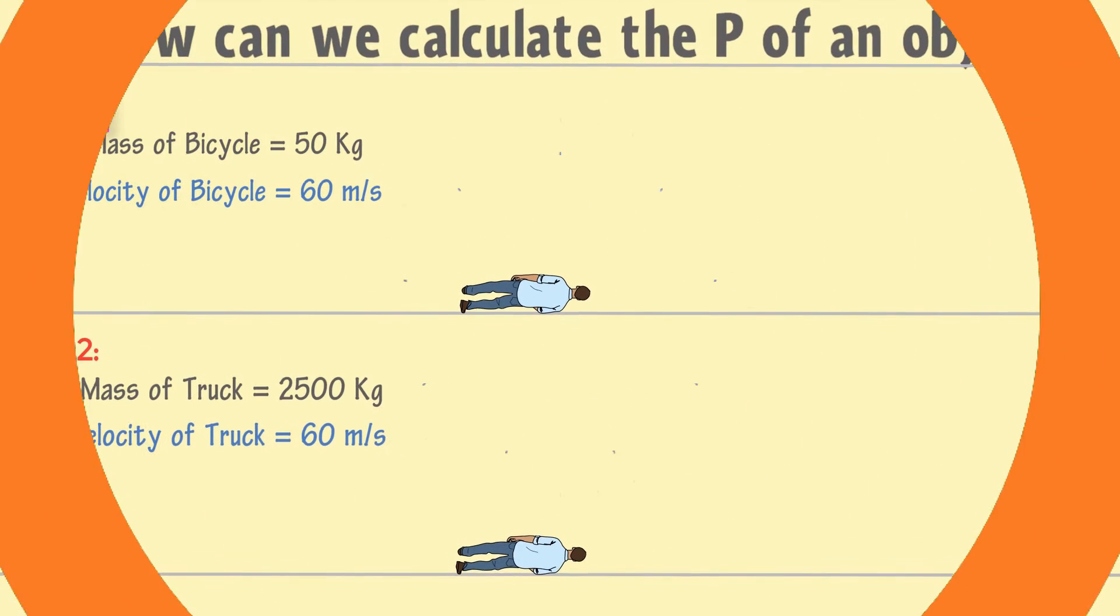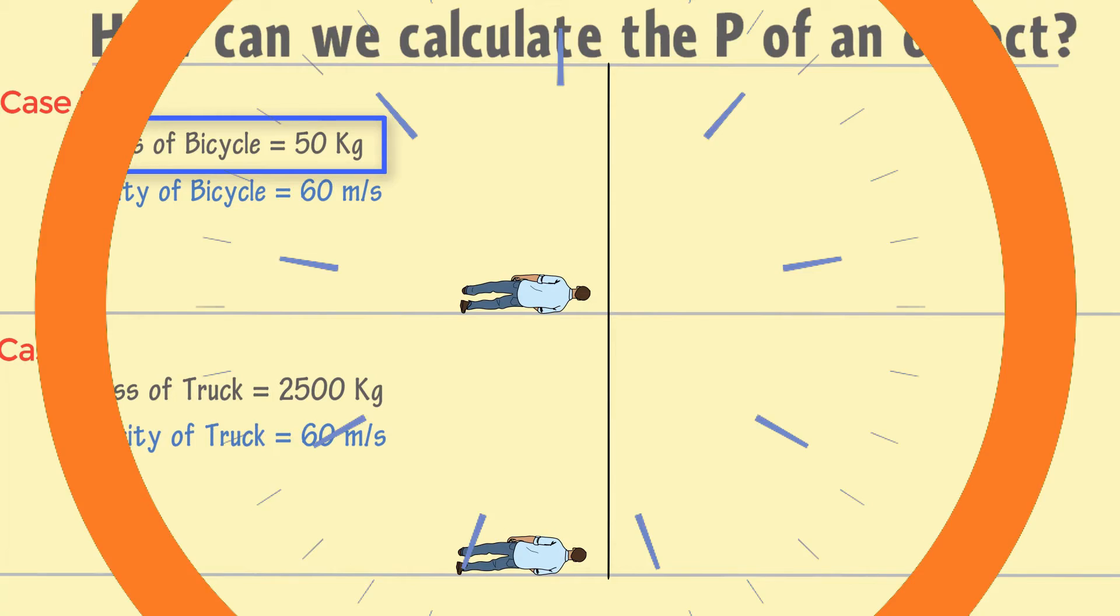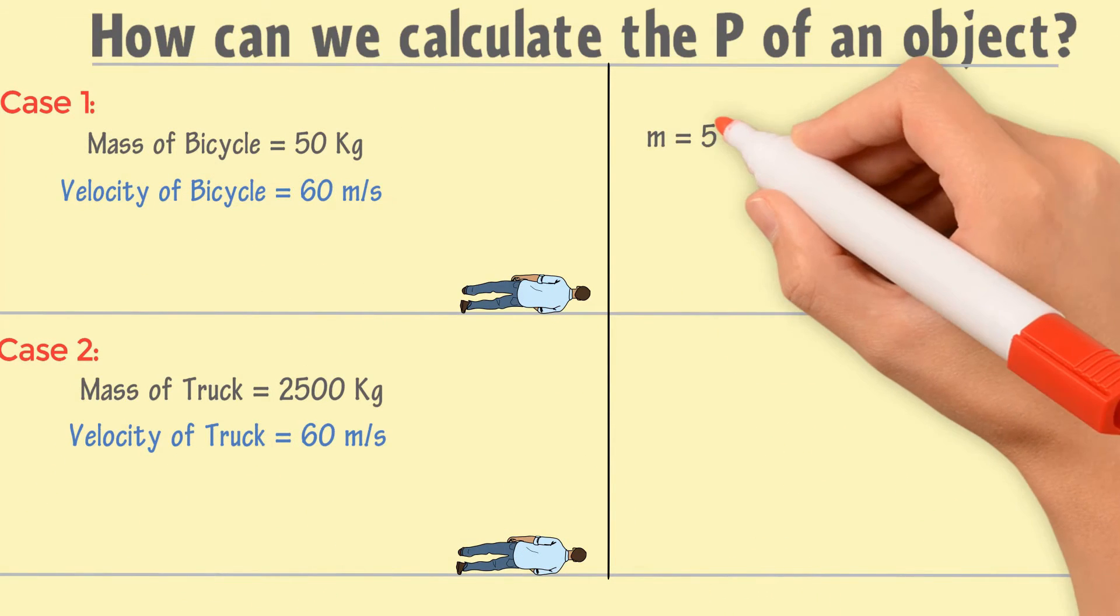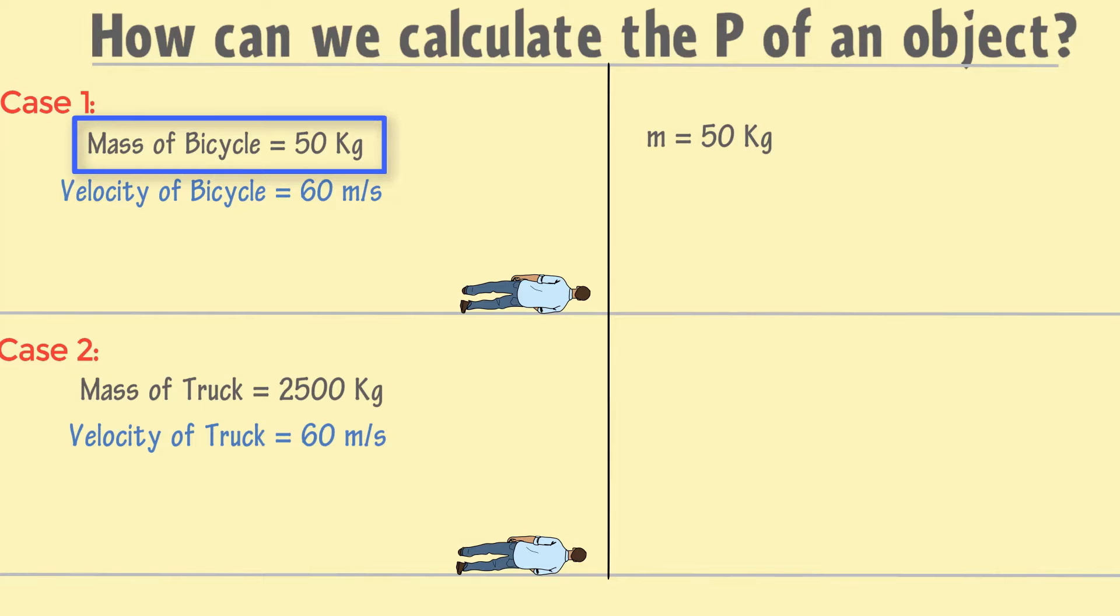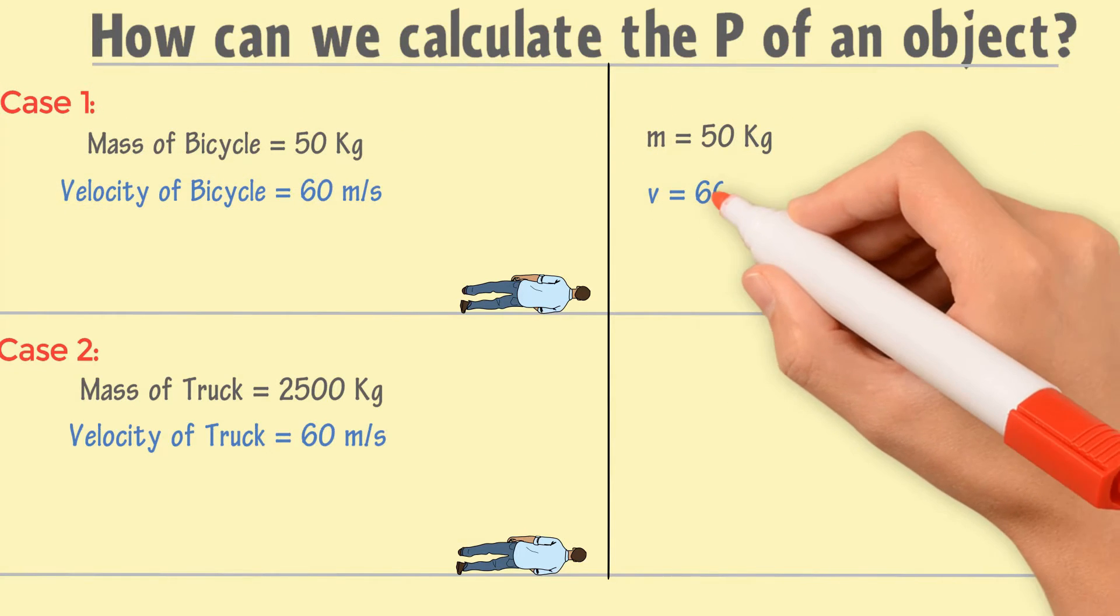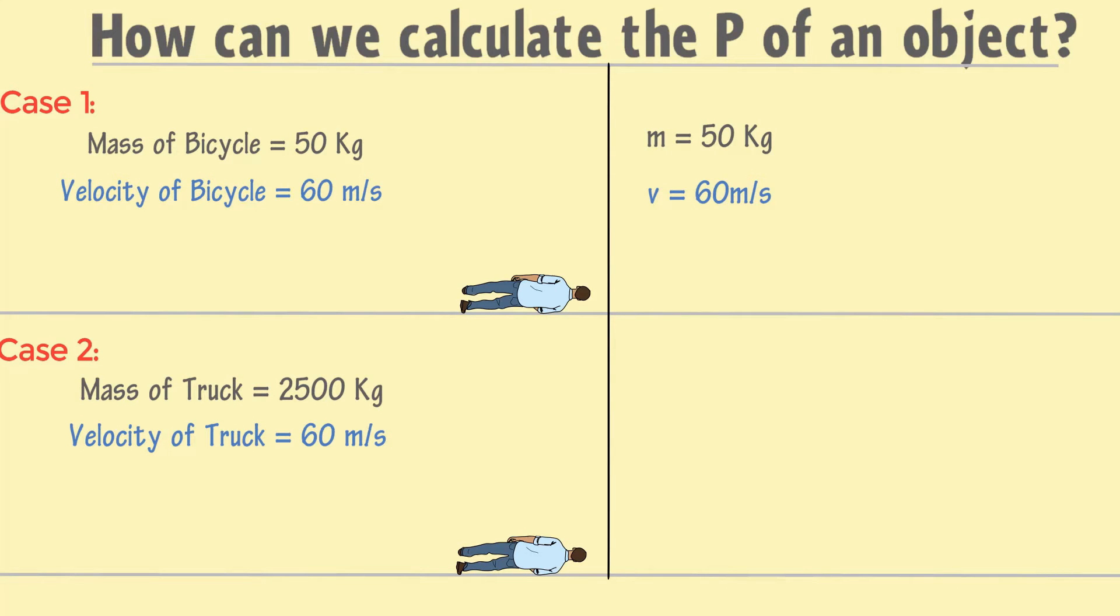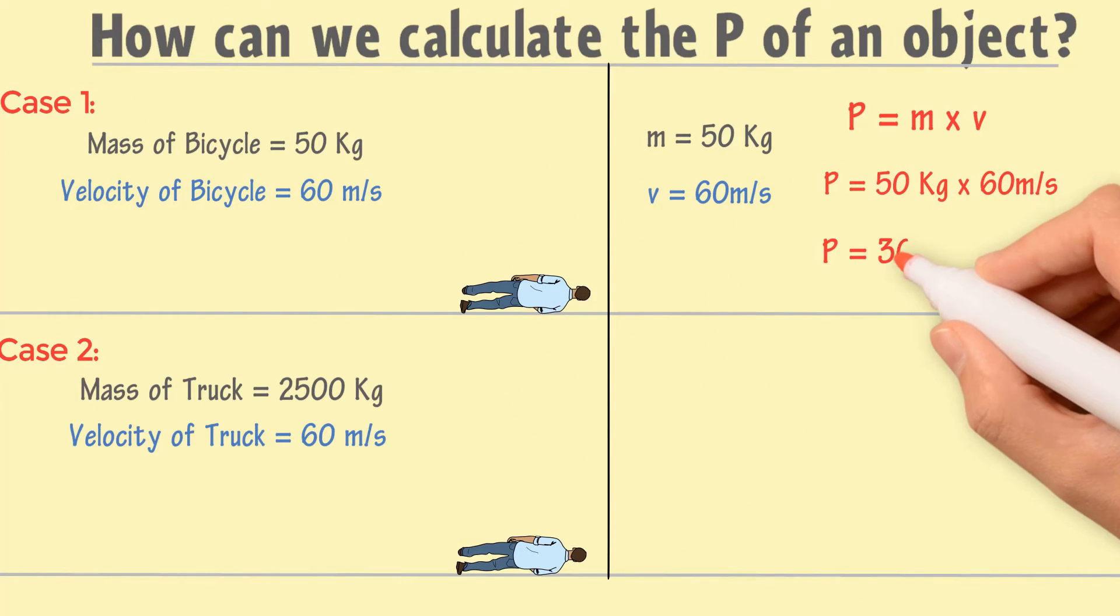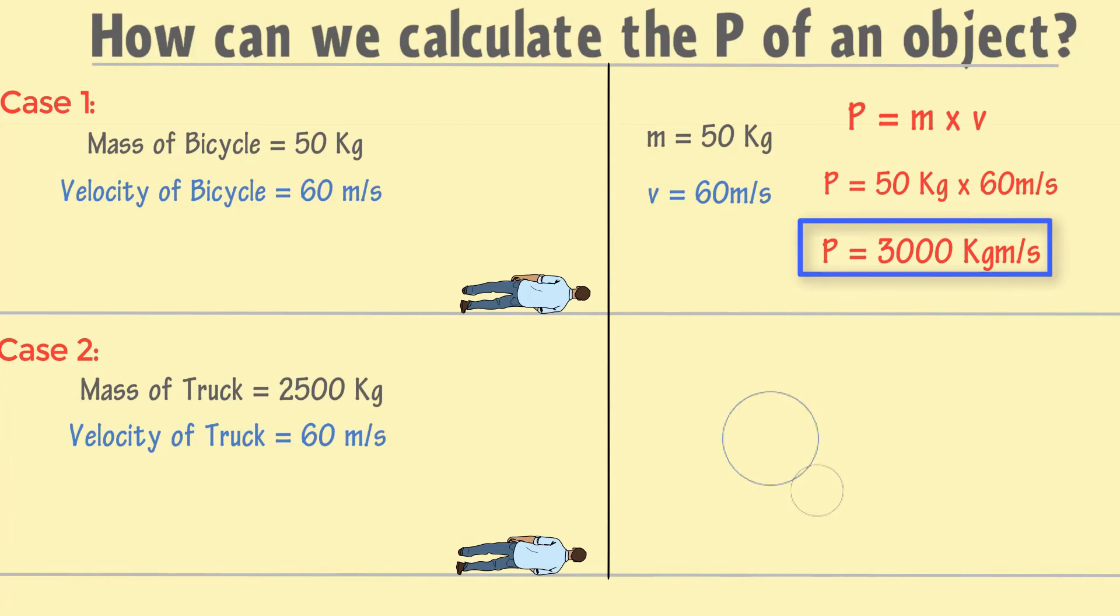Let me explain these two cases in physics. In case 1, the mass of bicycle is 50 kg, meaning m equals 50 kg, and its velocity v is equal to 60 meter per second. Hence, the momentum P of the bicycle is equal to mass times velocity. Now putting values in the formula, P equals 50 kg times 60 meter per second. We get 3000 kg meter per second. Hence, the momentum of bicycle is 3000 kg meter per second.